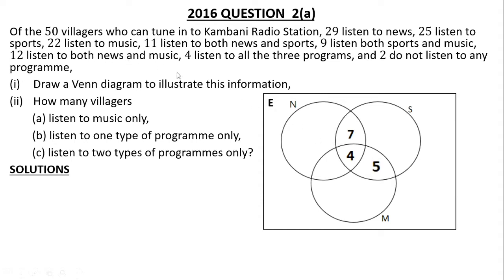We have 12 who listen to both news and music, so for the news and music only region, we subtract 12 minus 4, which gives us 8. After that, we go back to the question where it says 29 listen to news. Under this region we are supposed to have 29 villagers, so we add 7 plus 4 plus 8 and subtract from 29.